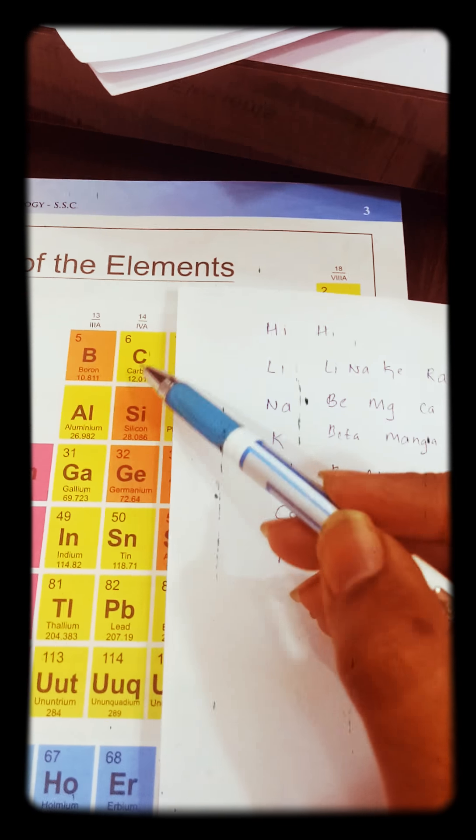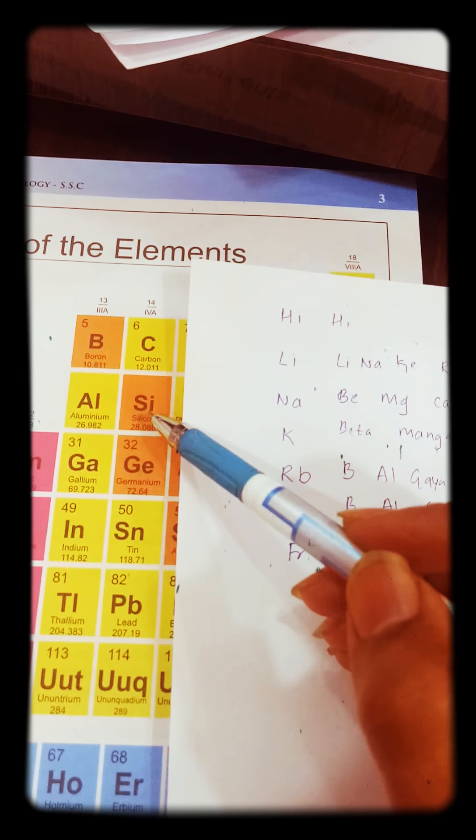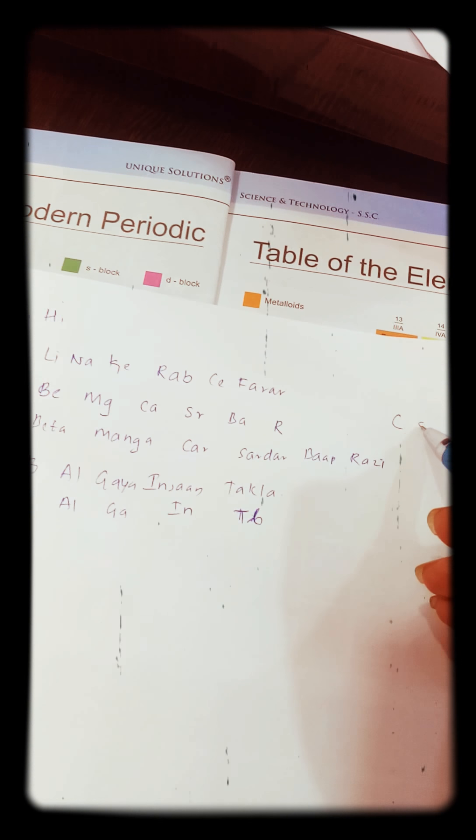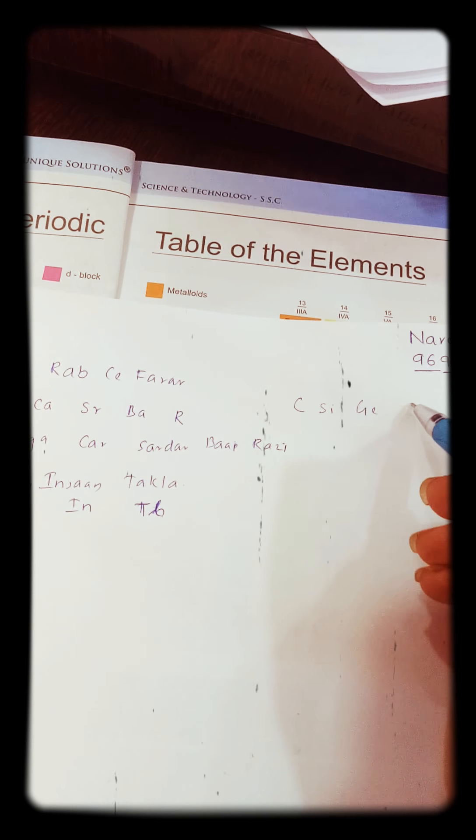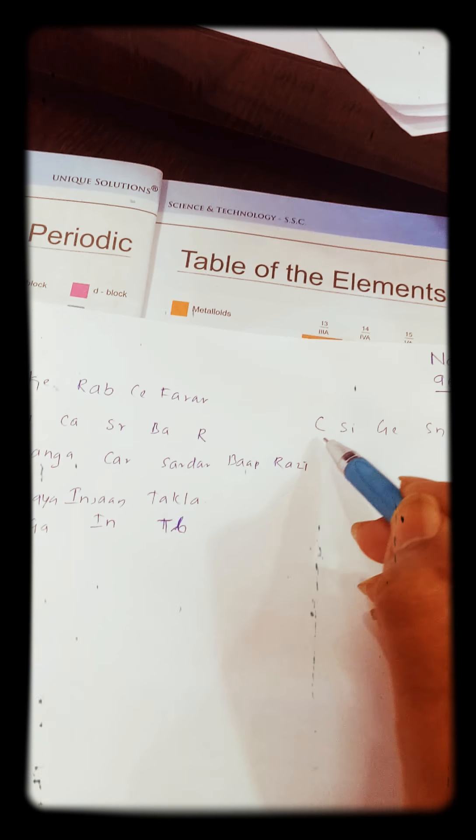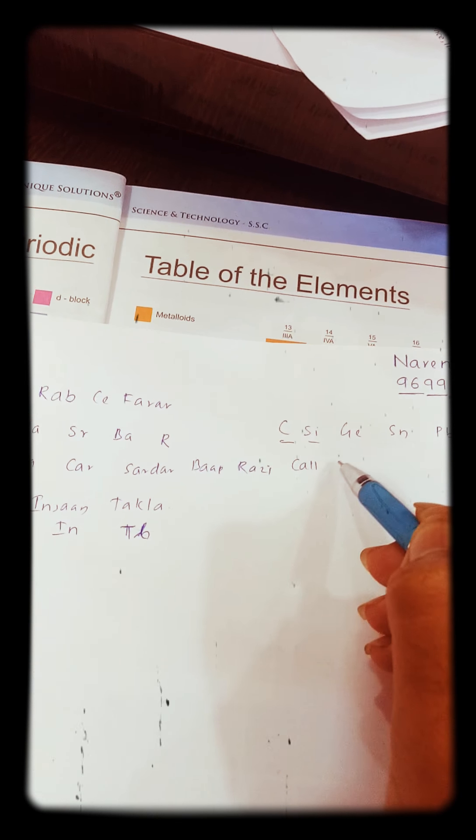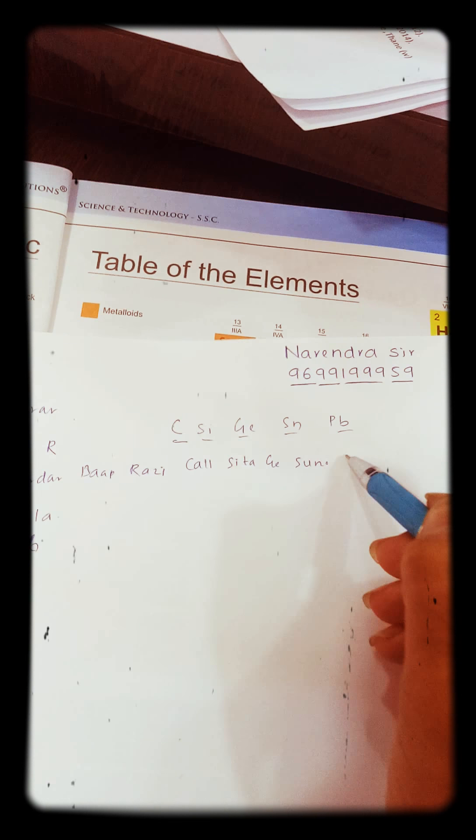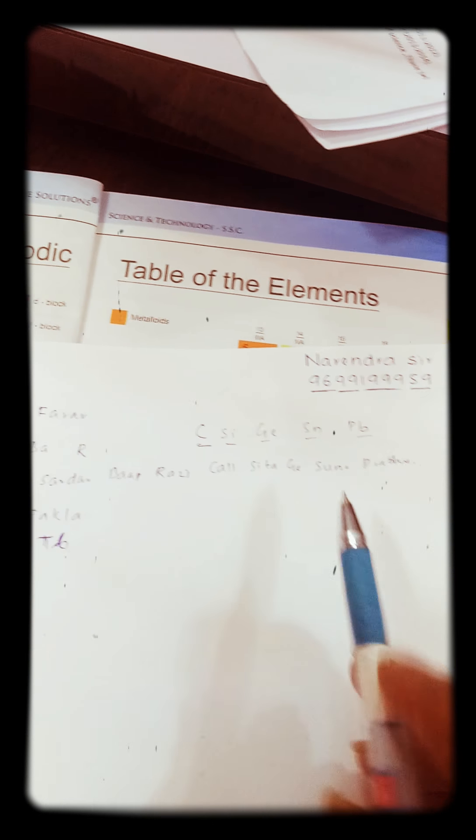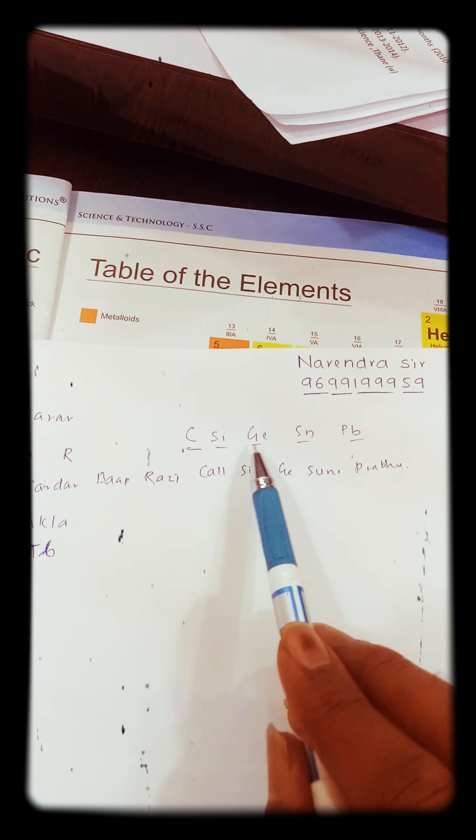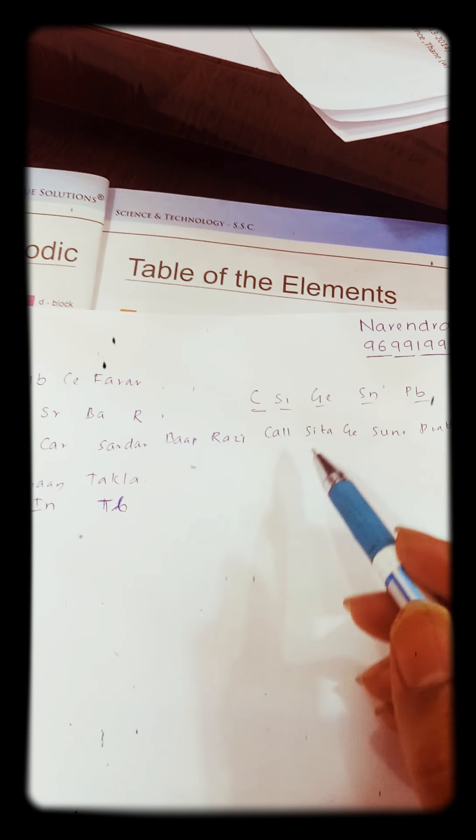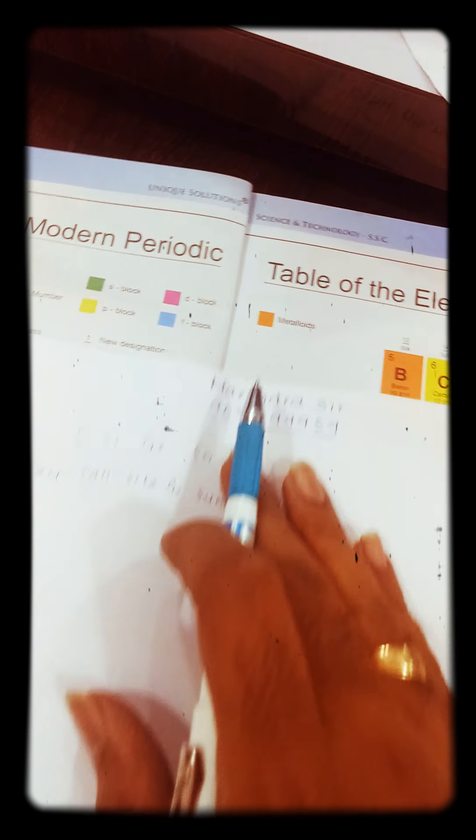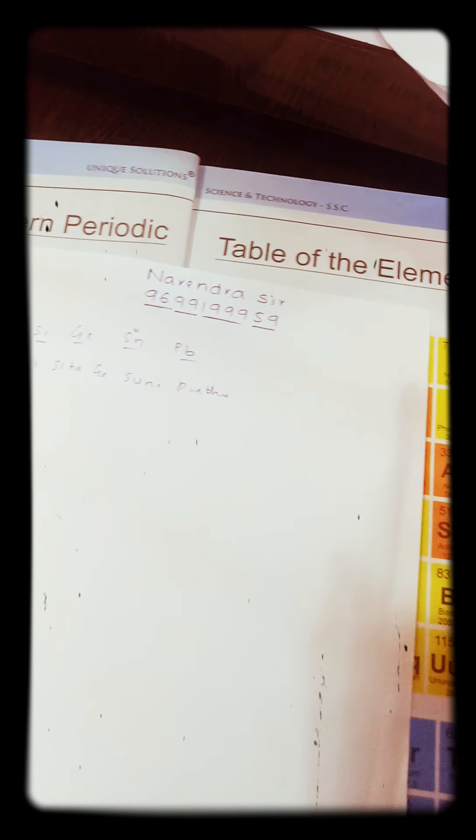And here you come up with the next group and that is 4th A group: Call Sita Ji, Call Sita Ji Suno Prabhu. It's very easy: Carbon, Silicon, Germanium, Tin, Lead.